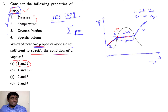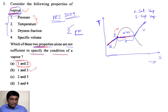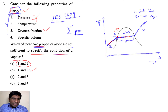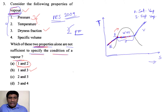Let's investigate the other options. What happens if I take properties 1 and 3 — pressure and dryness fraction? From the given pressure, automatically we can calculate the temperature, and if we also know the dryness fraction, then we can calculate the other parameters.